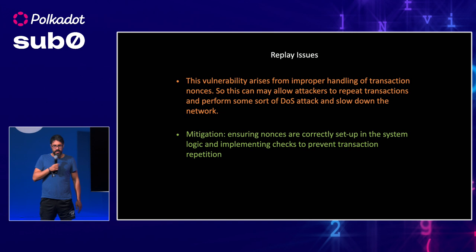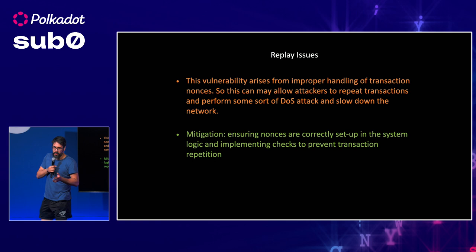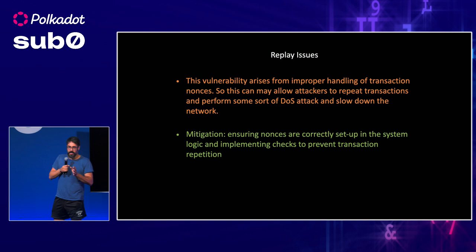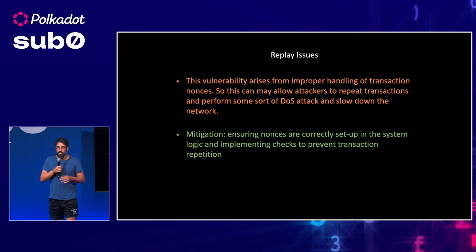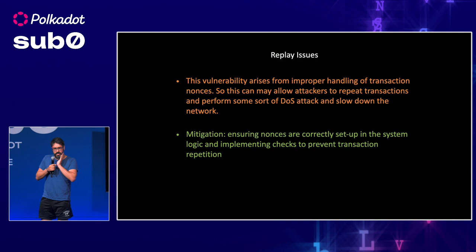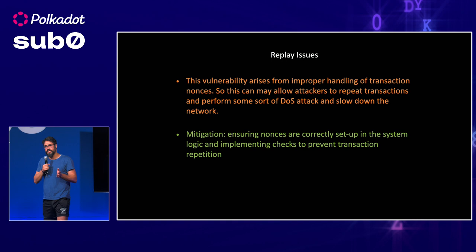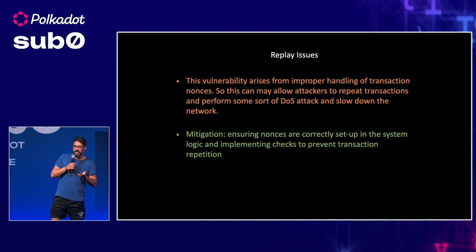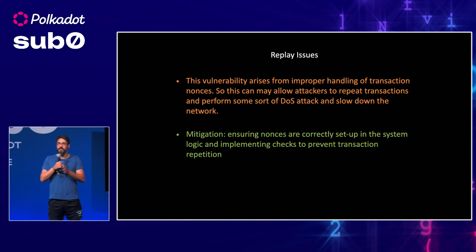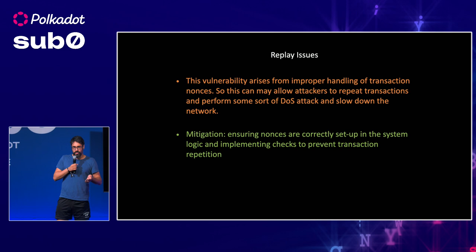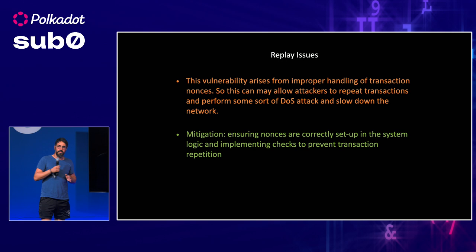The other issue, which is quite interesting, is replay issues. This mostly comes from improper handling of transaction nonces, which allows attackers to repeat the same transaction and perform a kind of DOS attack on your nodes or endpoints. I recently saw this frequently in some of my audit projects — Cosmos SDK chains and Golang code — and it can relatively easily be exploited by hackers to take down your node or maybe your entire network. You can mitigate this by ensuring that nonces are correctly set up in the system, having proper logic to handle that, setting limits, and preventing transaction repetition.